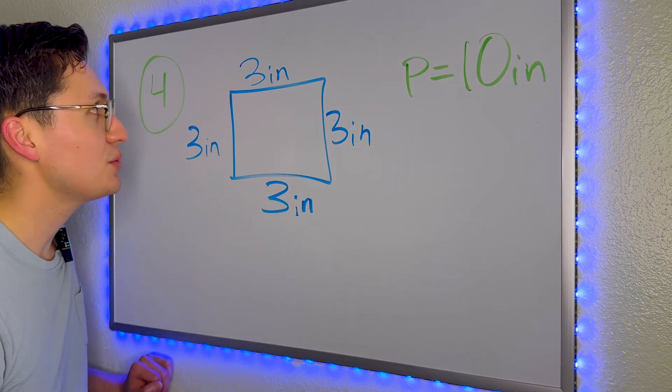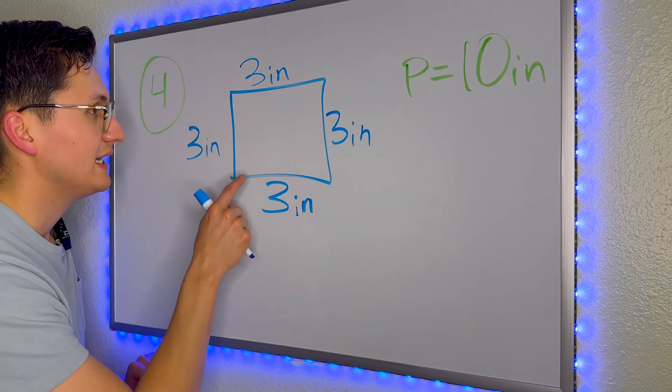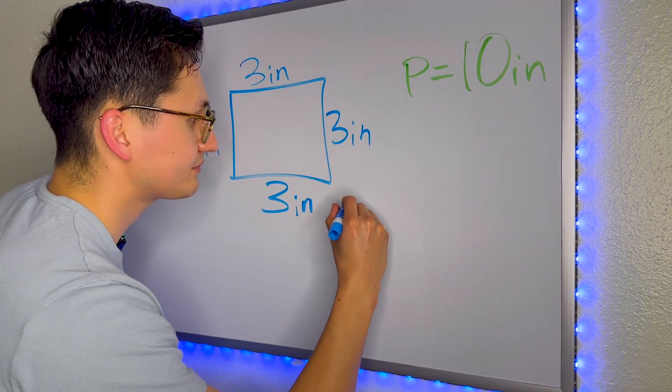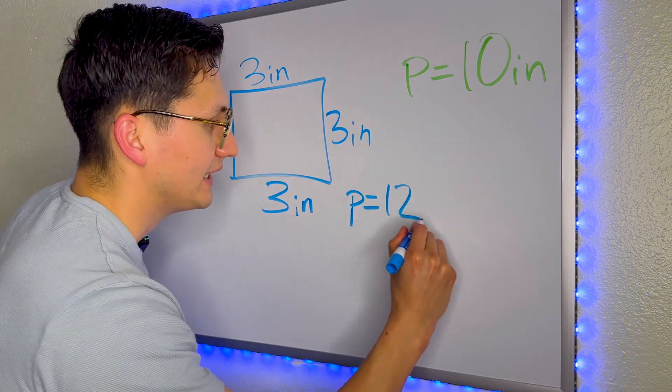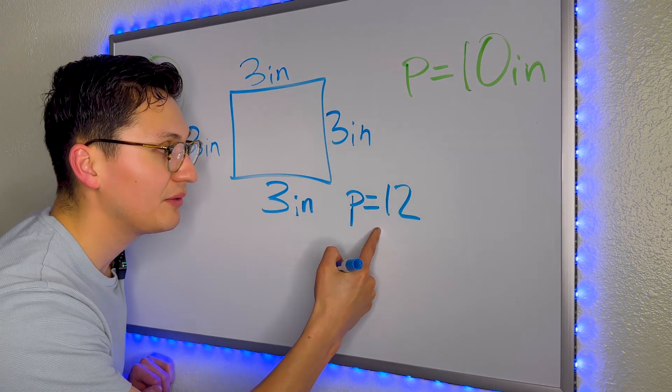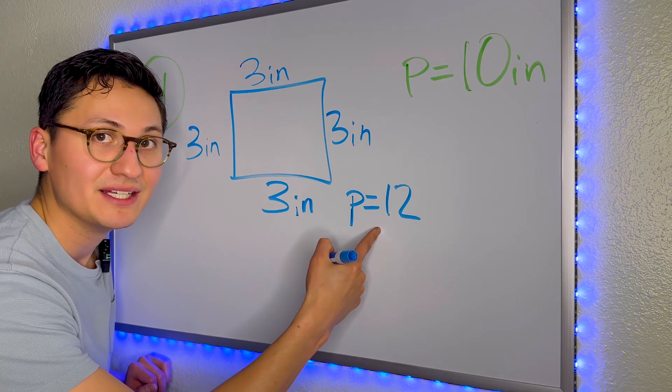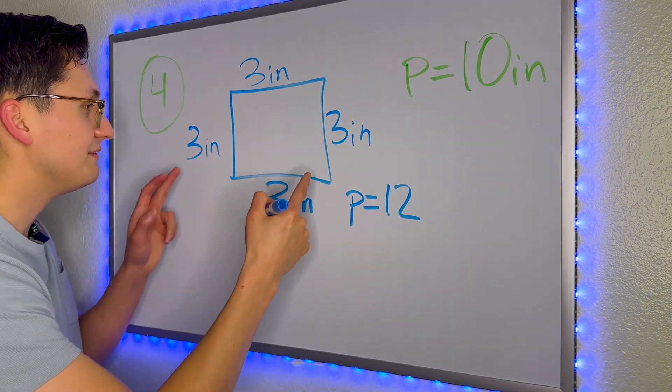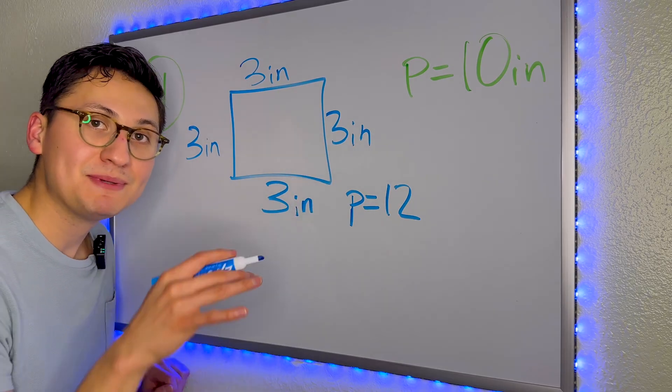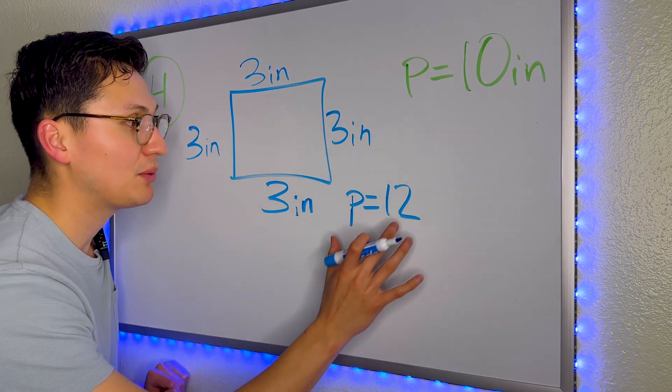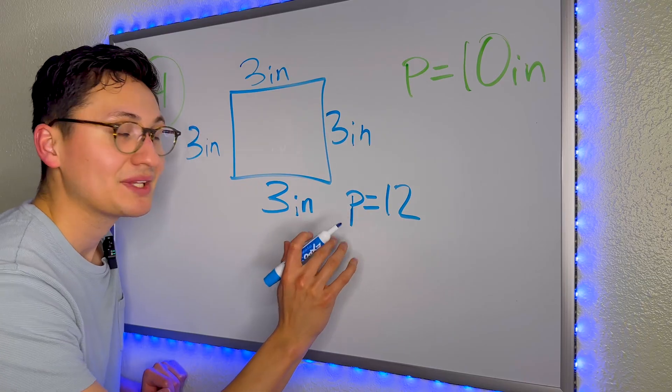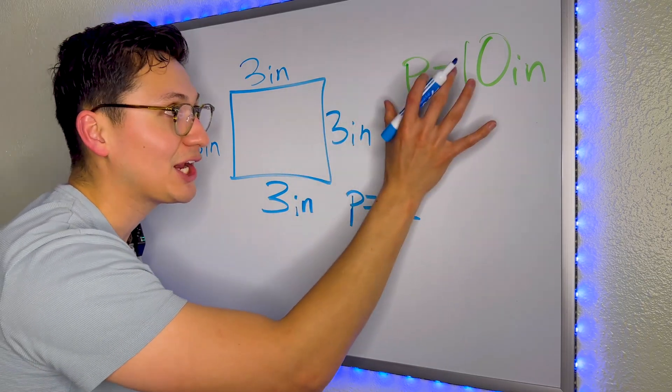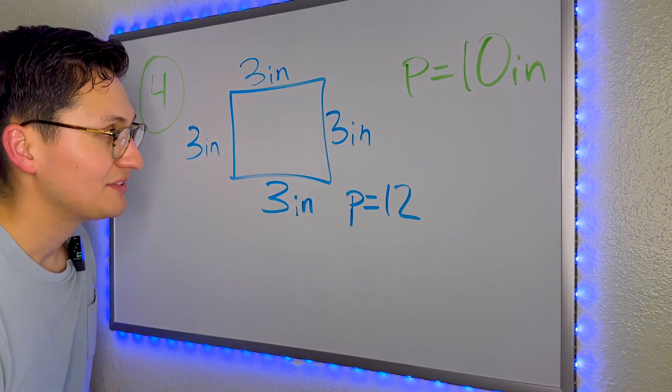And in order for us to find the perimeter, we have to add all the sides. And when we do so, we get 3, 6, 9, 12. The perimeter, if this was a square, would be 12. But they're telling us that the perimeter is actually 10. So the length of these two sides must be less because the perimeter that we got is greater than the actual perimeter. So it's not 3.